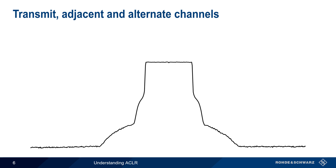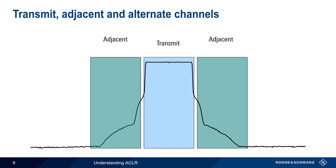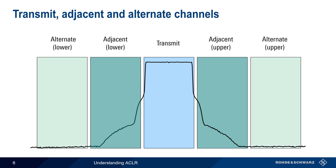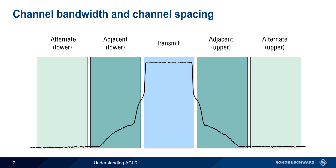All ACLR measurements require the measuring of power in the transmit channel and in at least one adjacent channel. In most cases, adjacent channels are paired and symmetric around the transmit channel. Adjacent channels can be designated as upper and lower for clarity. Note that channels don't normally directly touch — there are small gaps between them. Many ACLR measurement standards also specify an additional set of channels above and below the directly adjacent channels, and these are often called alternate channels to distinguish them from the channels which are truly adjacent to the transmit channel.